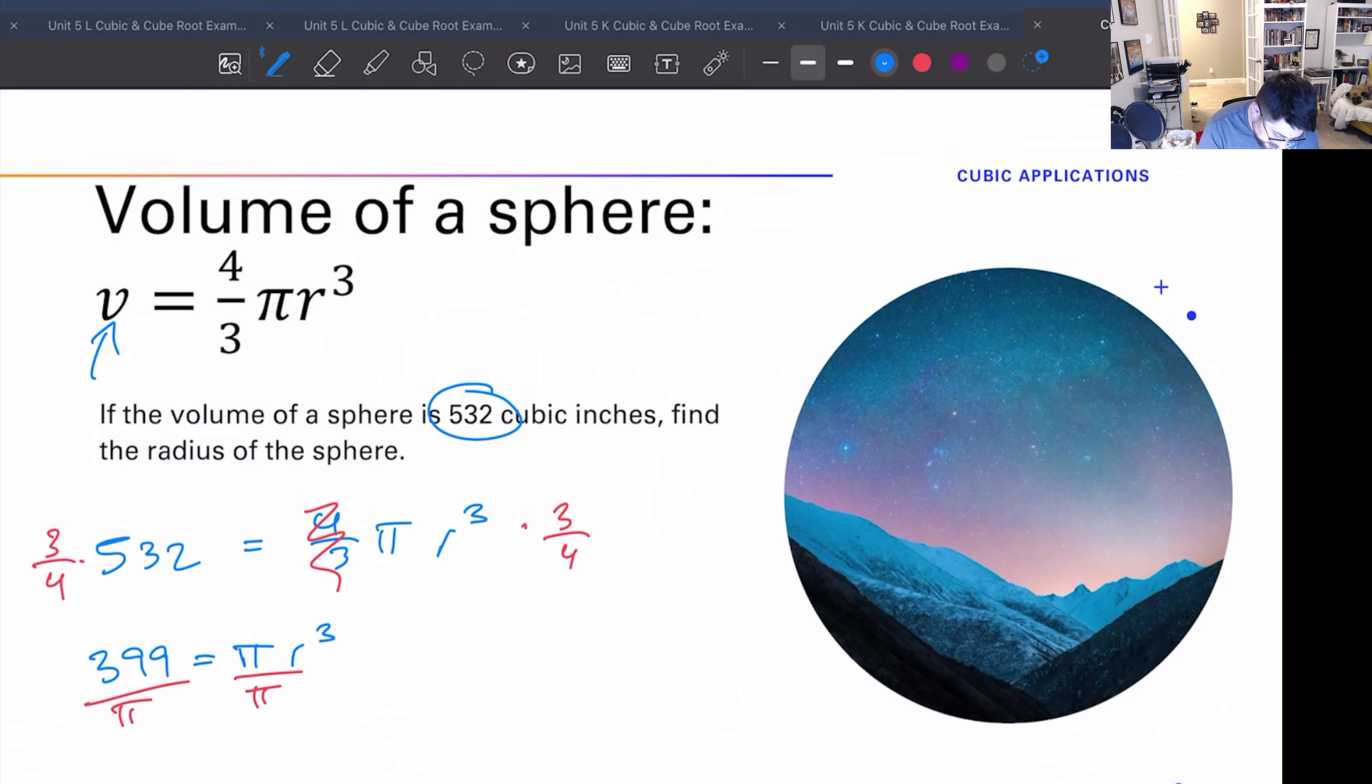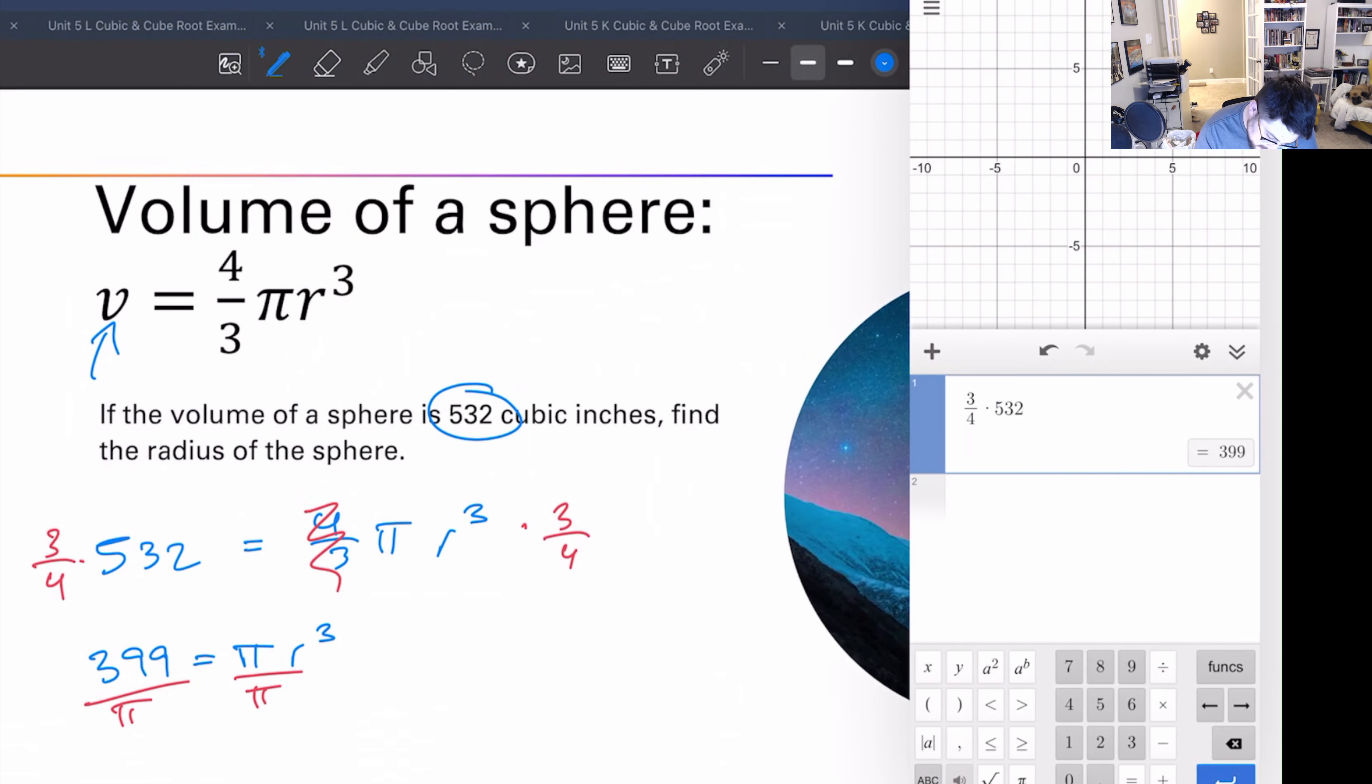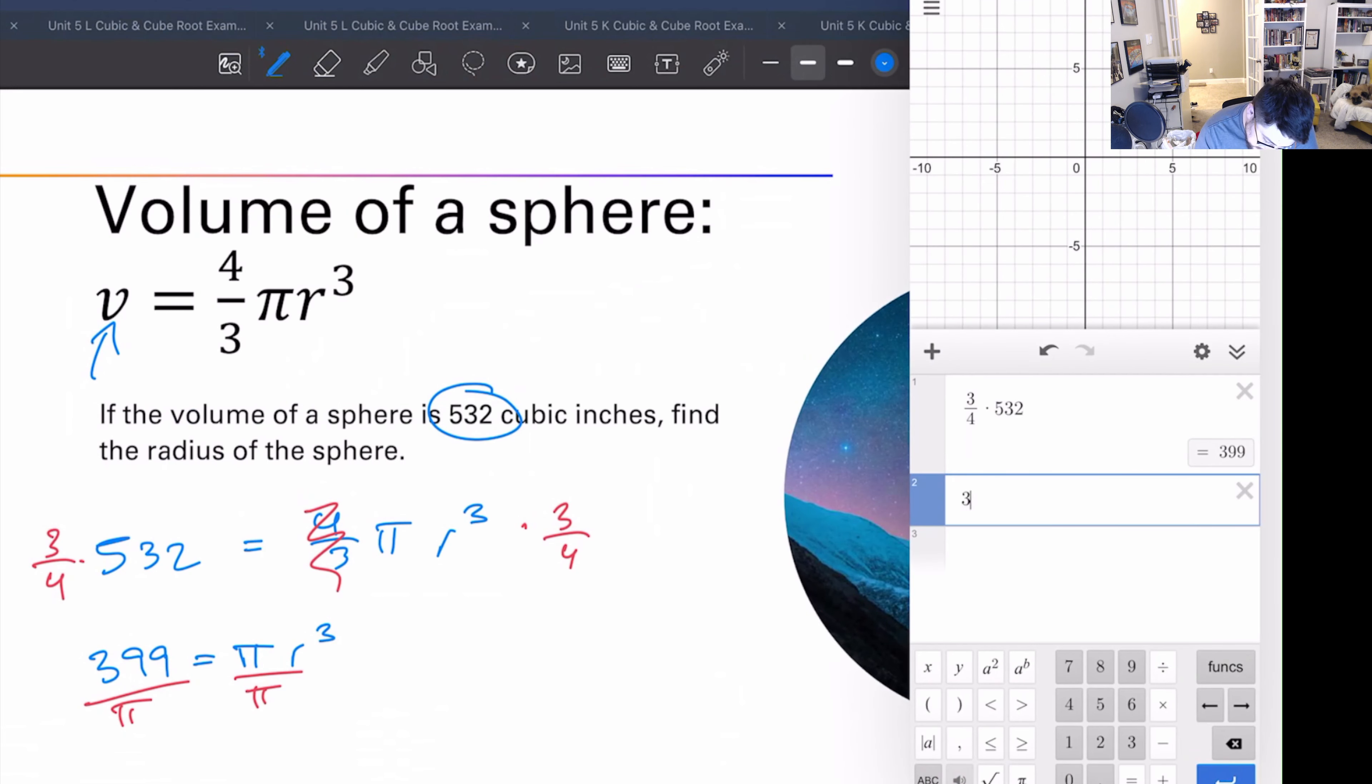Alright, so I'm going to do three fourths times 532, get 399. Cool, so I have 399 equals pi r cubed. Now let's divide by pi to get rid of pi. So now we have 399 divided by pi. We get roughly 127 down to a couple of decimal places, 127-ish equals r cubed.